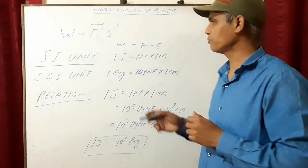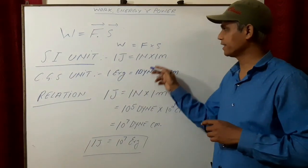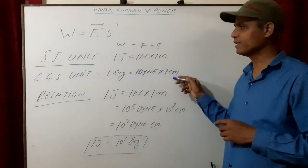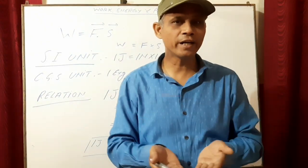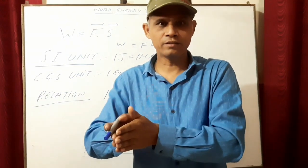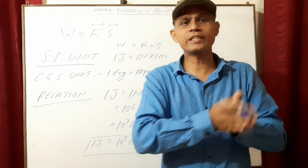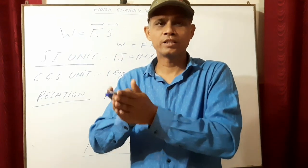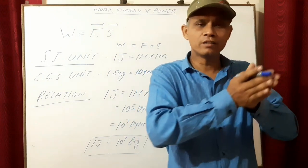What is the CGS unit of work? CGS unit of work is erg. Force is dyne, displacement is centimeter, then work is in erg. How will you define it? If a force of 1 dyne displaces the body through 1 centimeter in the direction of force, then the work is said to be 1 erg.